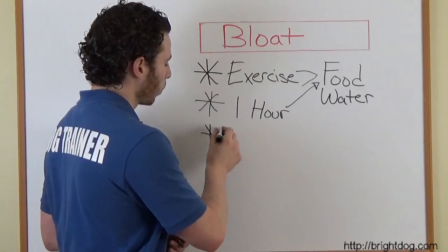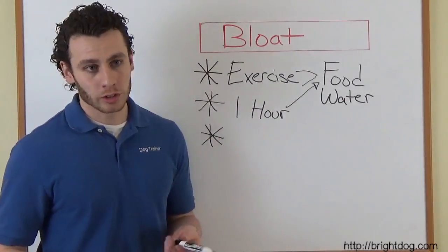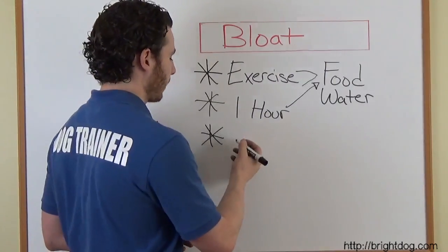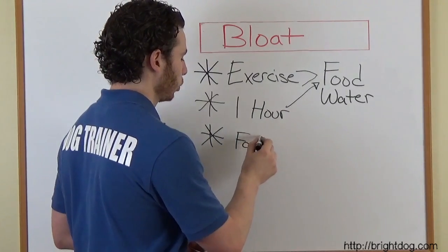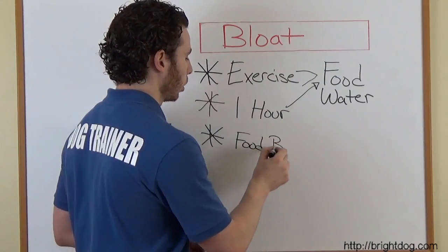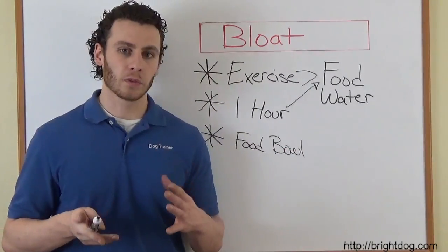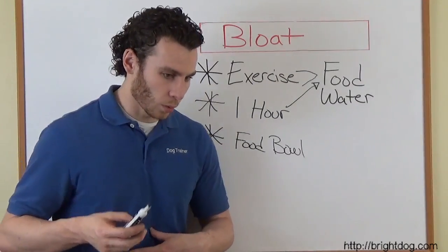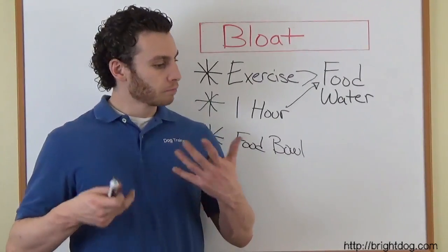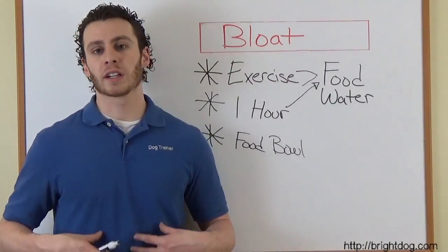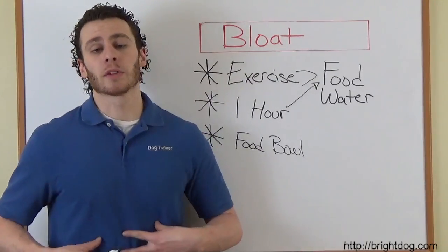Like I said, there's not one clear sign, one clear reason why bloat occurs, there's just many theories. Another one is having a food bowl that is too low. If you have a large dog and your food bowl is too low, you want to try to get something to elevate it. When you have a large dog that's bent down trying to get that food, something can happen where they suck in air or something happens with their stomach as they're swallowing, and something can happen where their stomach flips.